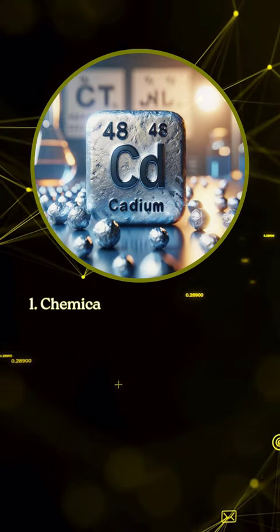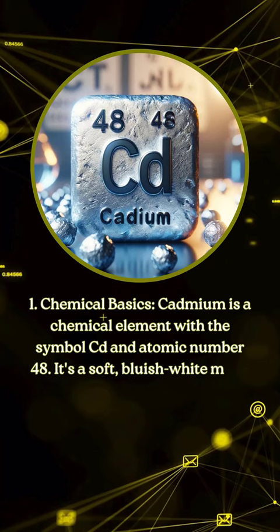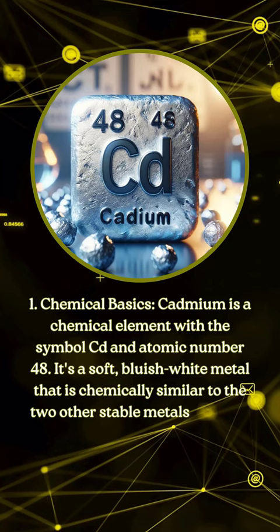Chemical basics: Cadmium is a chemical element with the symbol Cd and atomic number 48. It is a soft, bluish-white metal that is chemically similar to the two other stable metals in Group 12, zinc and mercury.